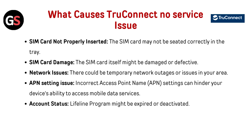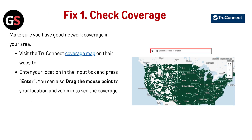There are several possible causes: the SIM card may not be seated correctly in the tray, or the SIM card itself might be damaged or defective. There could be temporary network outages or issues in your area. Incorrect Access Point Name (APN) settings can hinder your device's ability to access mobile data services. Also, your Lifeline program account might be expired or deactivated.